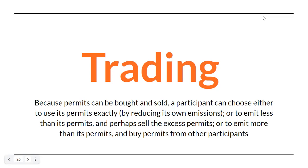If I am an industry and I am polluting more, I need to pay the other industry which is polluting less, and in a way offset my emissions. A polluting industry has the option either to reduce its pollution or pay more money to less polluting industries, so that in total the cap which is put is adhered to. That is the trading part of the cap and trade aspect.